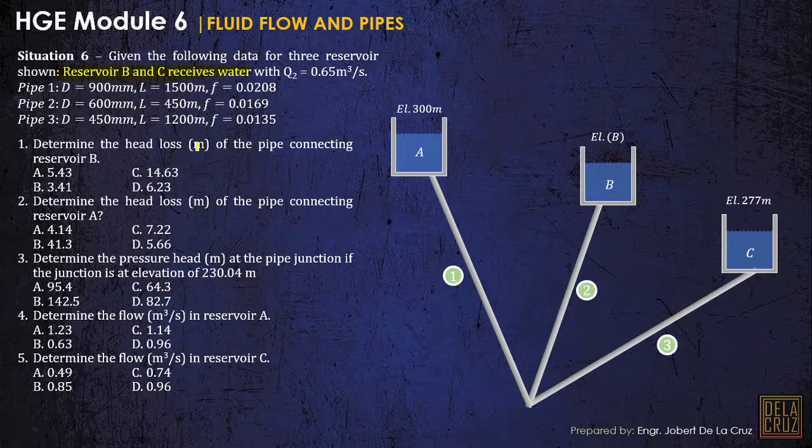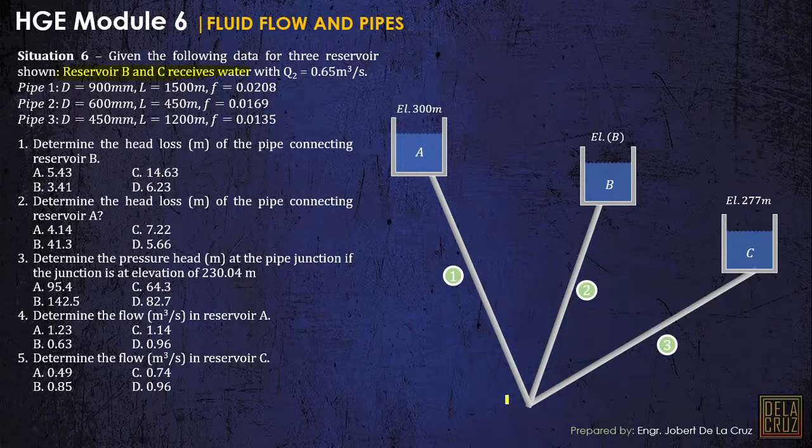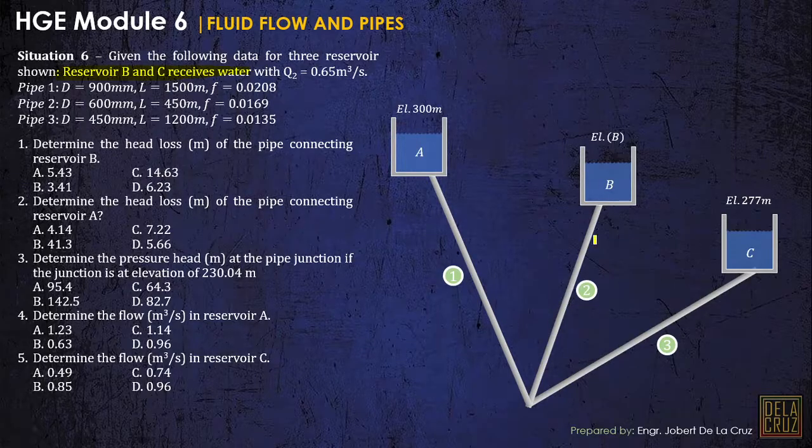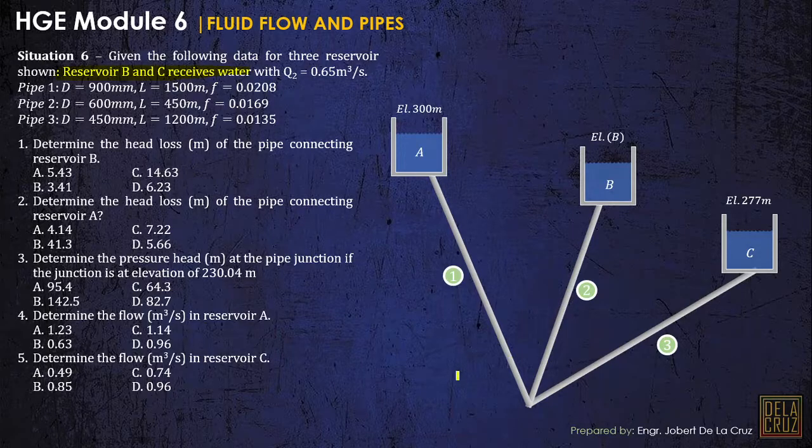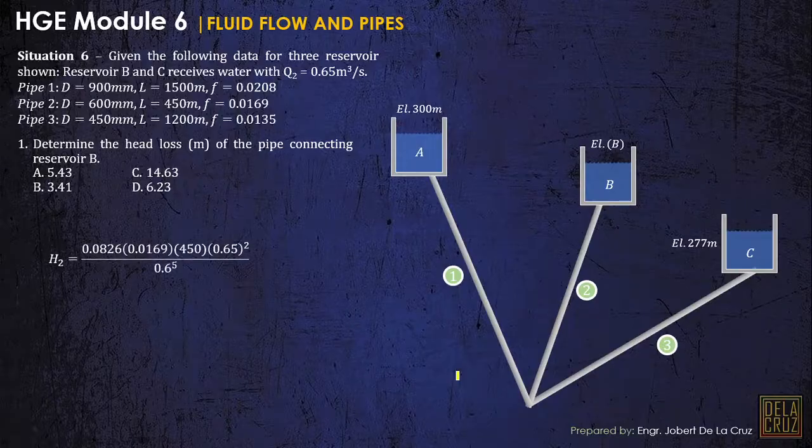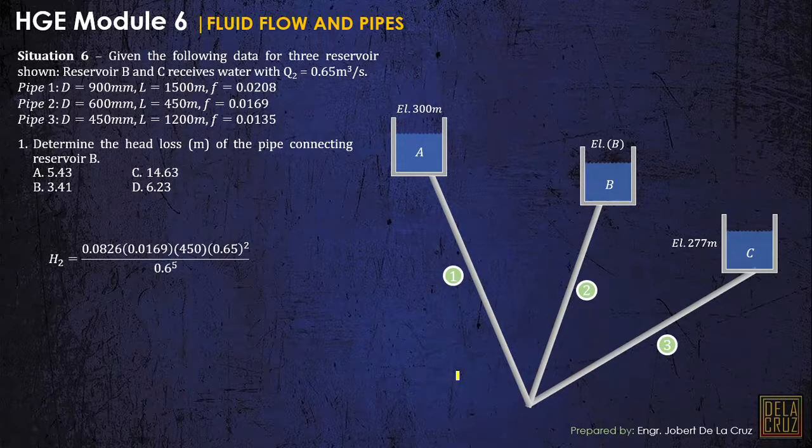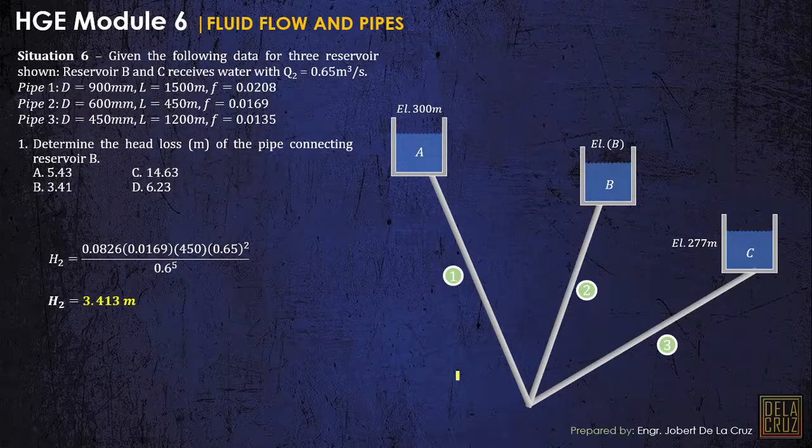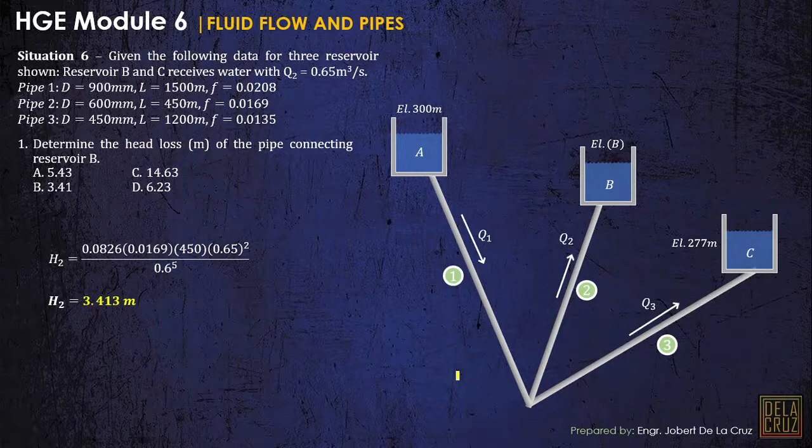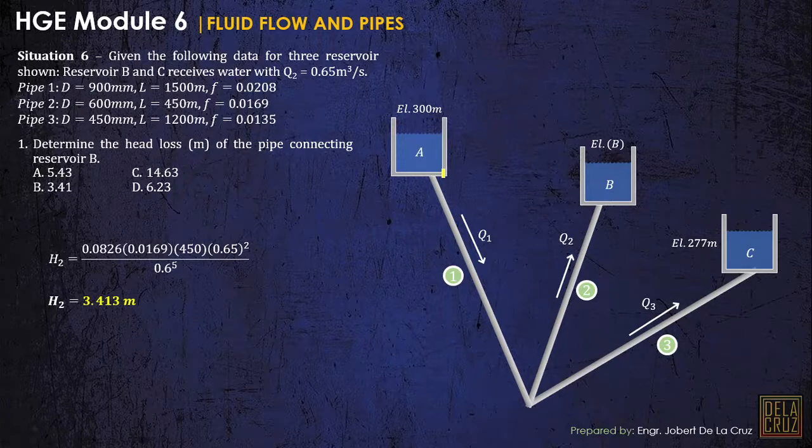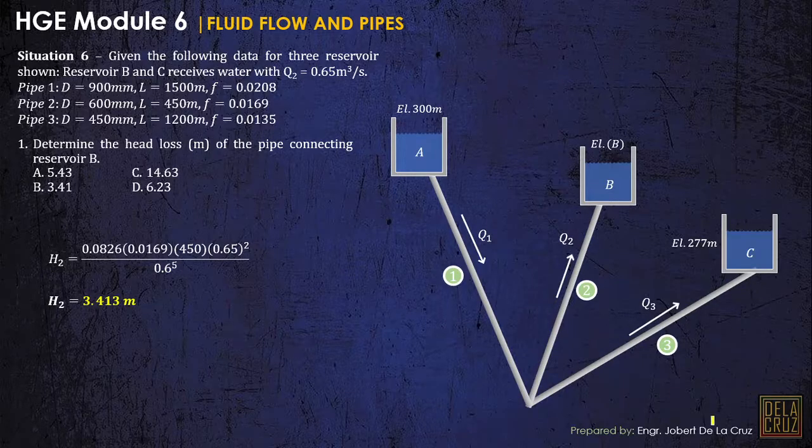So what is the significance of this statement? Reservoir B receives water. Take note that that is an important statement because it will define the energy grade line. So that means if reservoir B and C receives water, that should be from A. And the flow of water here should be like this. So from reservoir A, the discharge of water will be distributed to reservoir B and reservoir C.